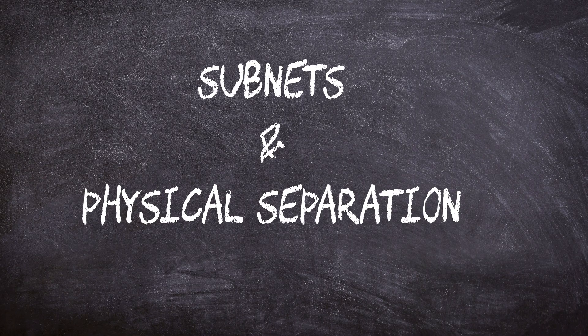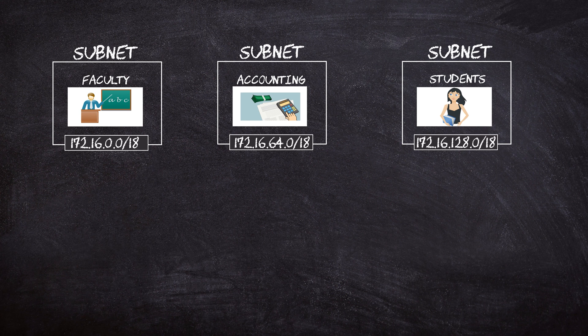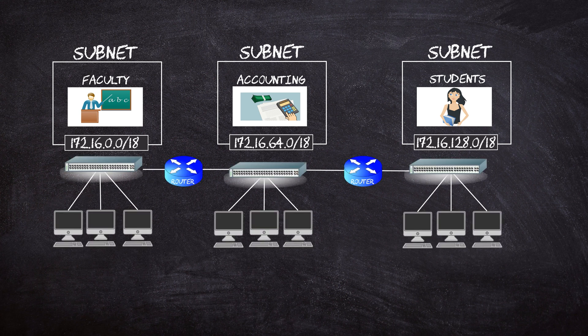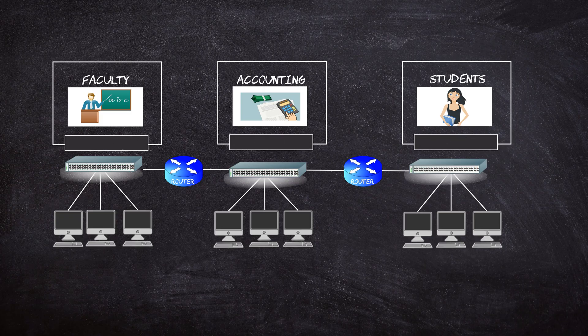We could go the traditional route with subnetting and physical separation, but that just means more infrastructure, more routers. And for a small to medium-sized company, or even your home network, that's a bit of an overkill.